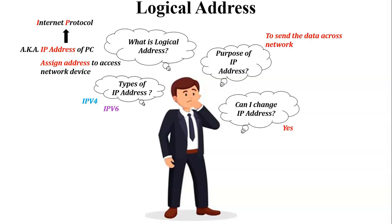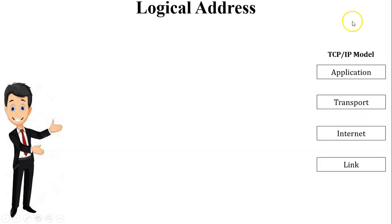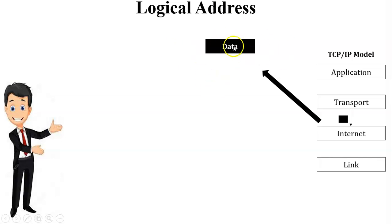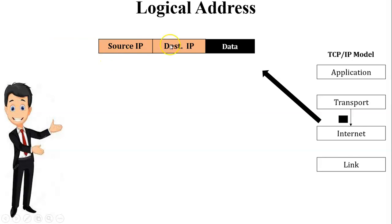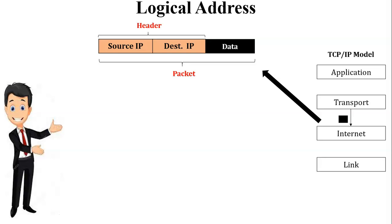Let us see one example. In the TCP/IP model, whenever data transfers from the transport layer to the internet layer, the segment is converted into a packet. Inside the packet there is the data, including application and transport layer headers. At the internet layer, one header is added containing the source IP and destination IP — this is called the header of the data, and this whole structure is called a packet at the network layer.